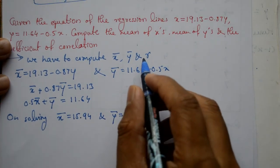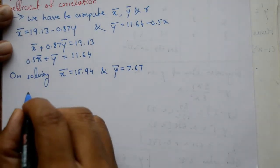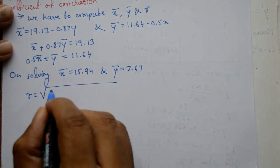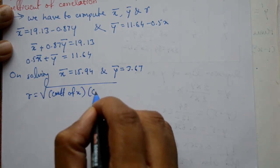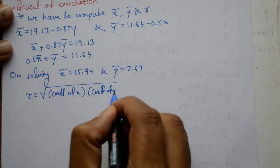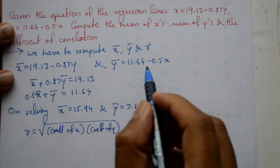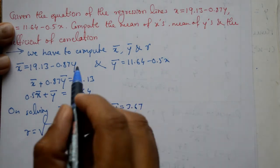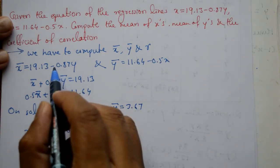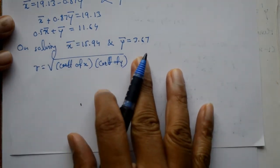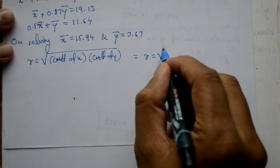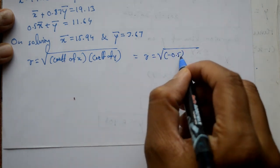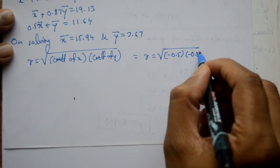You know the formula, r is equal to square root of taking coefficient of x into coefficient of y. See the coefficient of x is minus 0.5, coefficient of y in this equation is minus 0.87. So r is equal to square root of minus 0.5 into minus 0.87.